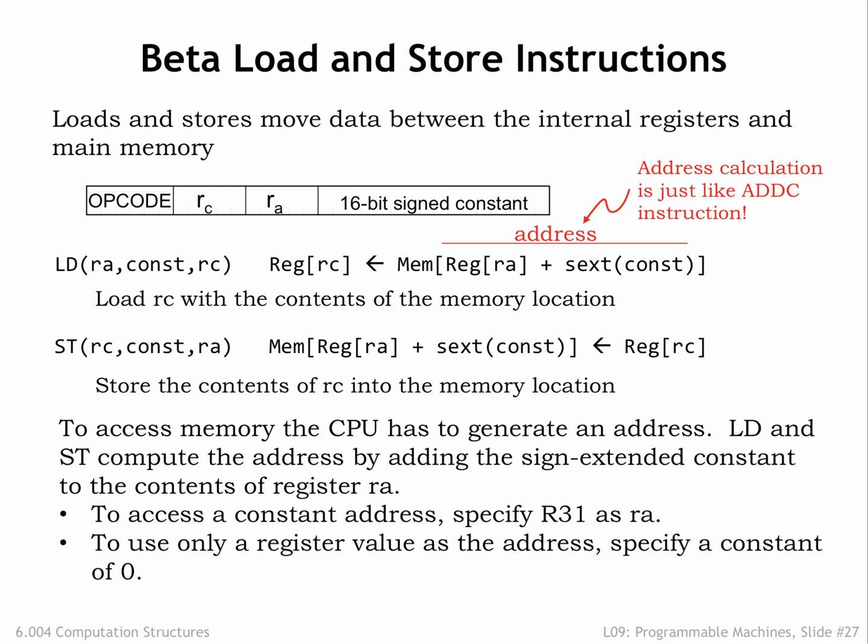The store instruction is special in several ways. It's the only instruction that needs to read the value of the RC register, so we'll need to adjust the datapath hardware slightly to accommodate that need. And since RC is serving as a source operand, it appears as the first operand in the symbolic form of the instruction, followed by const and RA, which are specifying the destination address. Store is the only instruction that does not write a result into the register file at the end of the instruction.